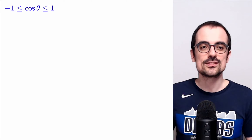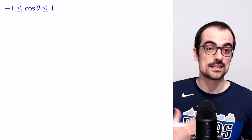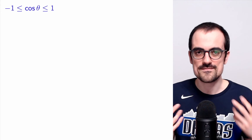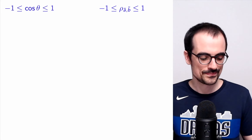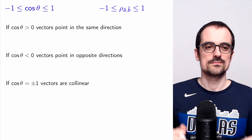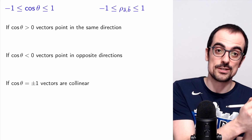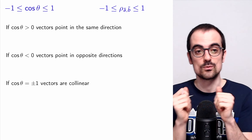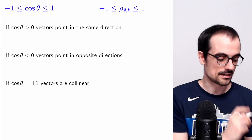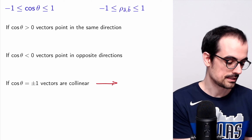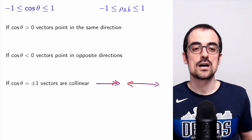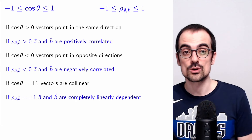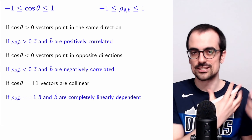The cosine of an angle is between minus one and one, so by this analogy we immediately re-derive that the correlation coefficient is between minus one and one. When it's positive, vectors point in the same direction; when it's negative, vectors point in opposite directions; and when it's equal to one or minus one, they're completely collinear. If the correlation coefficient equals one, the two vectors are on top of each other; if it equals minus one, they're collinear but pointing in opposite directions.